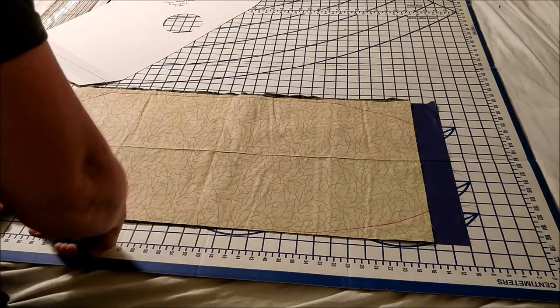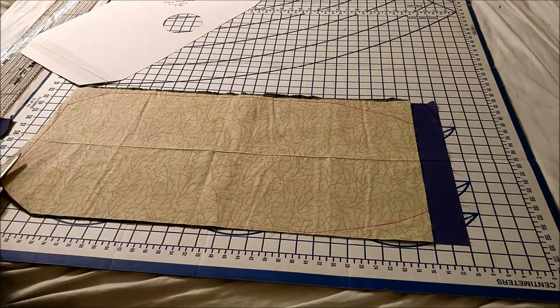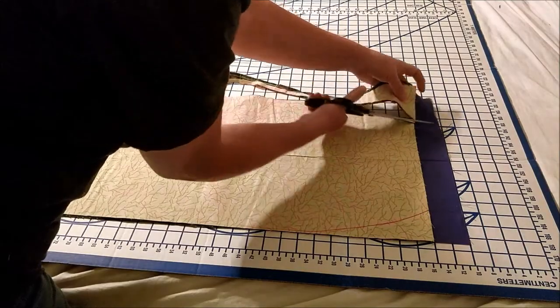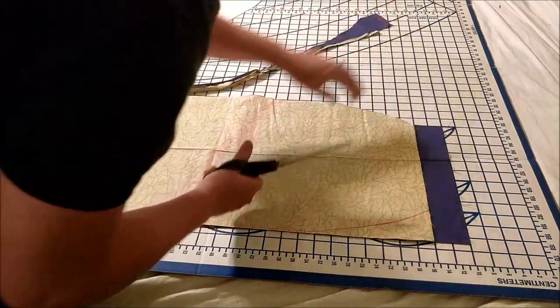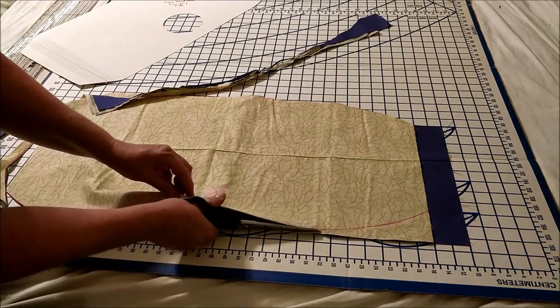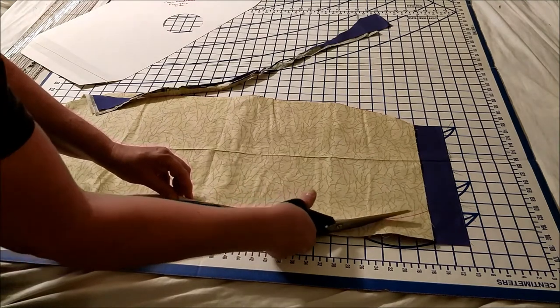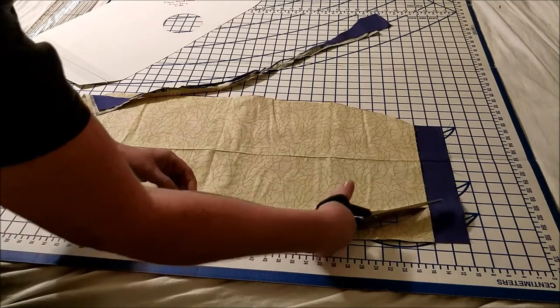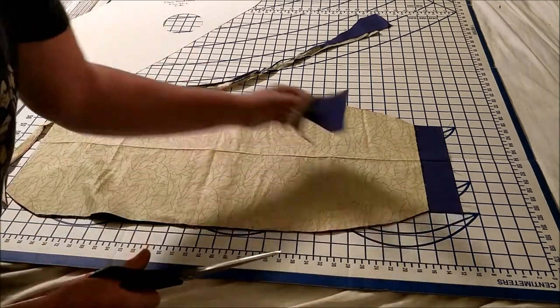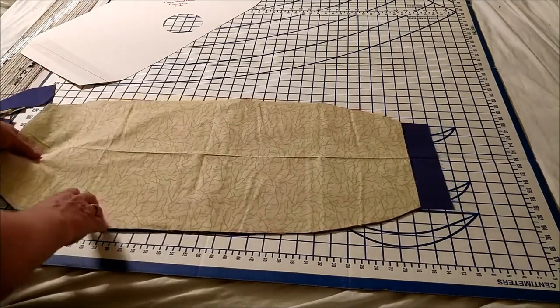And again, we're going to cut it out. Cutting on the inside of the line, so it's the same size as the template, and cutting through all three layers. And there we go, we have the other side of the bag and the front side of the bag.